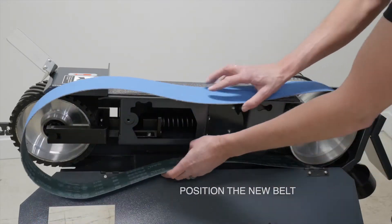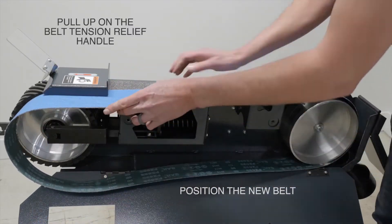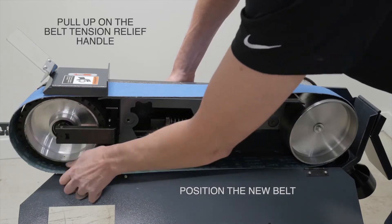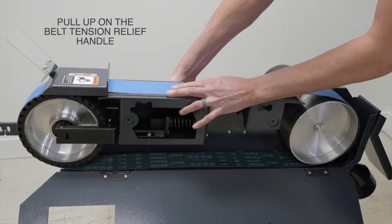Place the new belt onto the machine and pull up on the belt tension relief handle and slide the new belt onto the drum rollers.